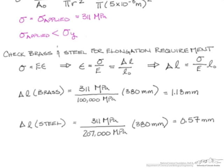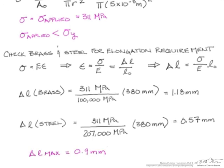What these values represent is the elongation we can expect if we end up using brass or we end up using steel. So, in this case, we know that delta L max can only be 0.9 millimeters. So, brass is going to elongate 1.18 millimeters, while steel is only going to elongate 0.57 millimeters.